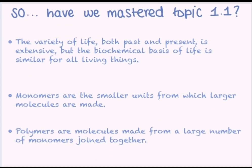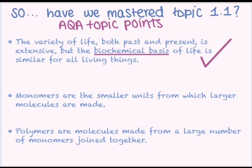Right, now that we have discussed all of the topic 1.1 content, it's time to check that we have mastered the points included in the AQA specification. First up, the variety of life, both past and present, is extensive, but the biochemical basis of life is similar for all living things. So that was the point we made about there being 8.7 million species on Earth, but just four organic polymers. So yep, we've covered that one. Next up, we have monomers are the smaller units from which larger molecules are made. We identified the definition of monomers as being single units, so yep, we know that one.